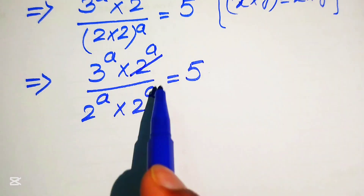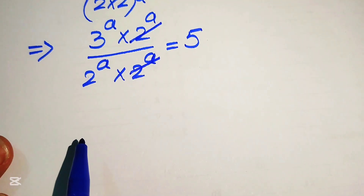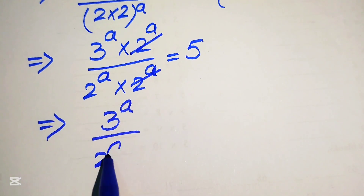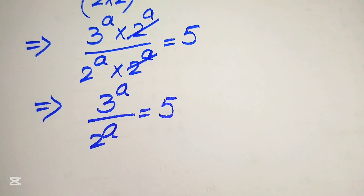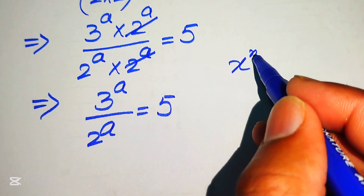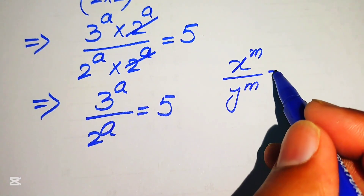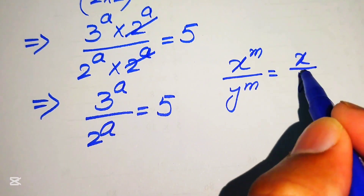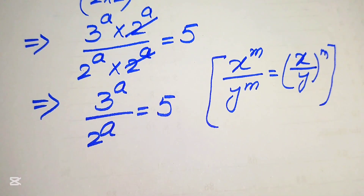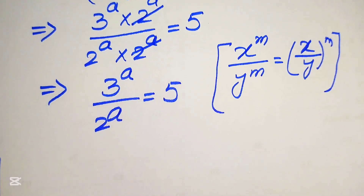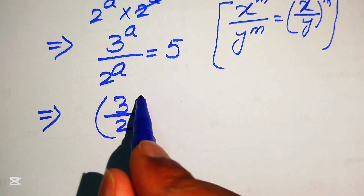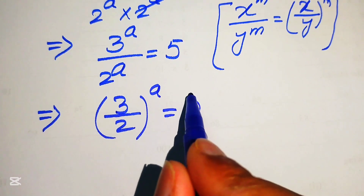Now this 2 to the power of a is cancelled out by the other 2 to the power of a, and the remaining terms are 3 to the power of a divided by 2 to the power of a equals to 5. We apply another exponent law: x to the power of m divided by y to the power of m equals x over y to the whole power m. According to this law we combine the exponents of these two terms, so it becomes 3 divided by 2, with whole exponent a, equals to 5.